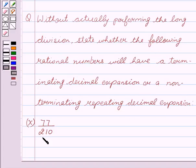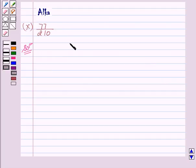Our given question is 77 upon 210. So, let's start with the solution. Let X equal 77 upon 210.